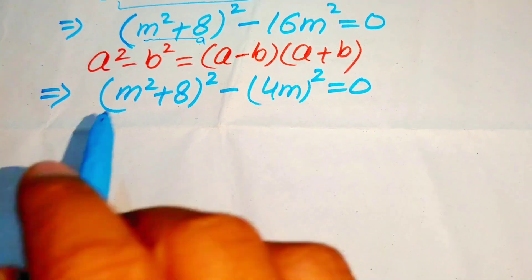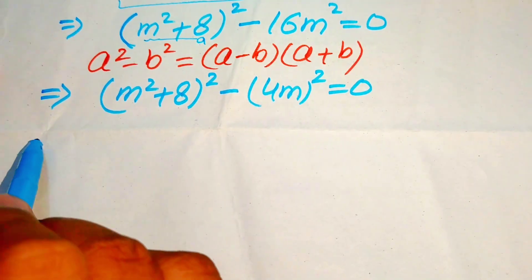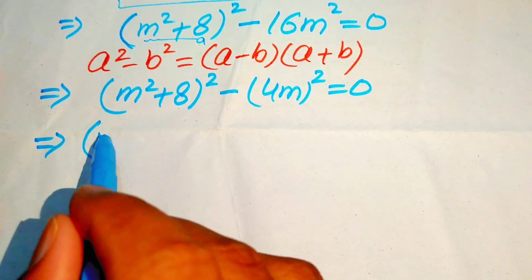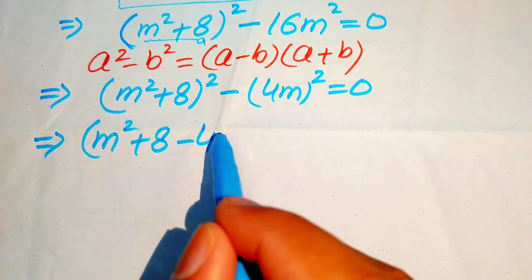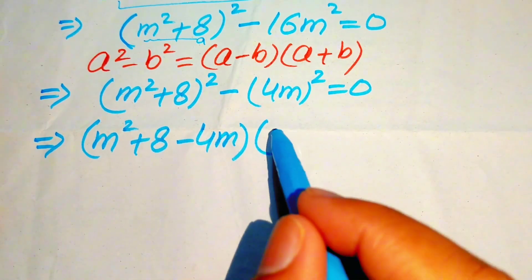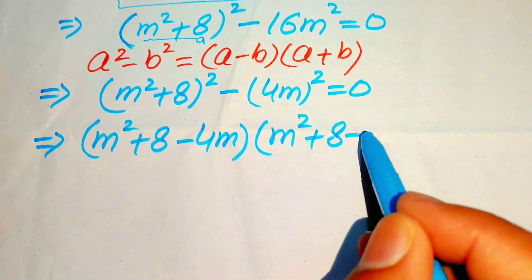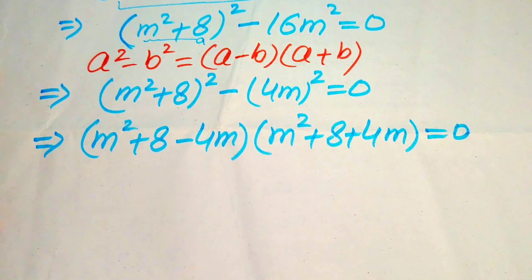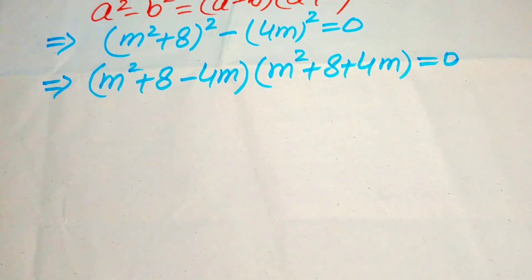Applying the difference of squares identity, we write this as (m squared + 8 minus 4m) times (m squared + 8 plus 4m) equals 0. So in the next step we have two cases.